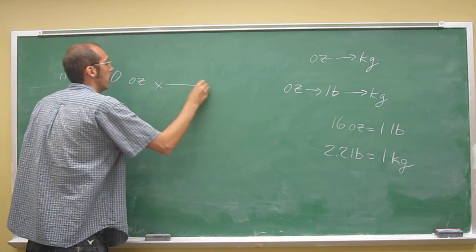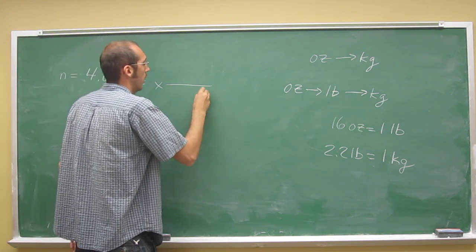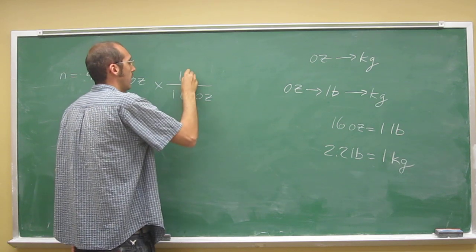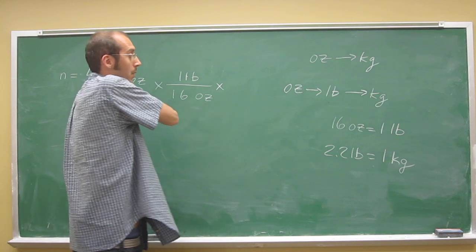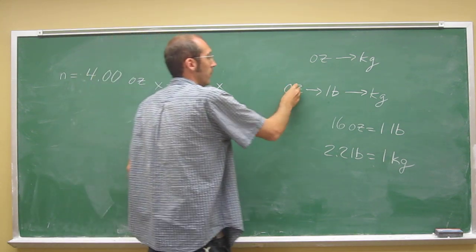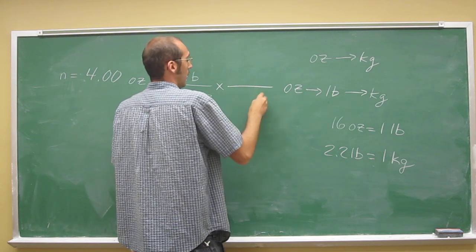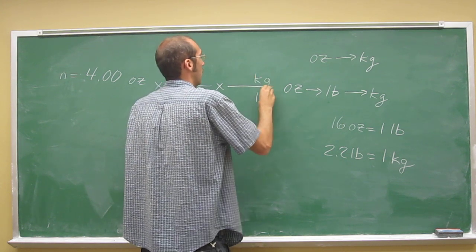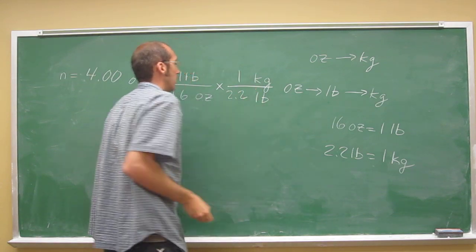So remember, we've got to get rid of our ounces. So we've got to put the ounces on the bottom. So it's 16 ounces per one pound. But we don't want pounds either. We want kilograms, right? Because we're going to want kilograms. So we've got to get rid of pounds by putting them on the bottom. And kilograms we want. So we'll put them on the top. It's one kilogram for every 2.2 pounds.